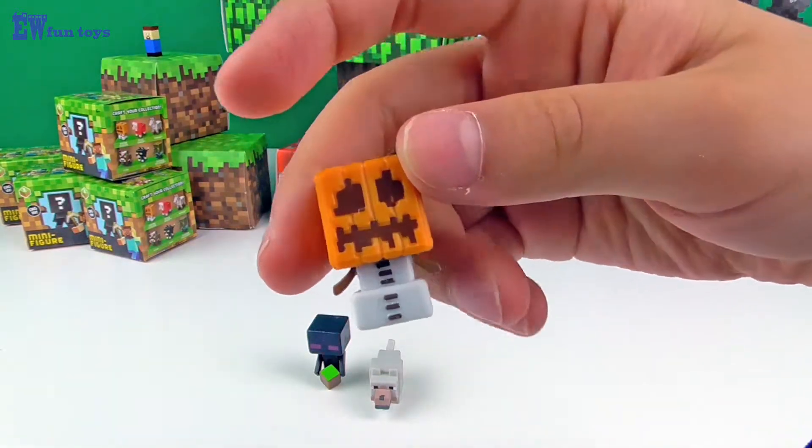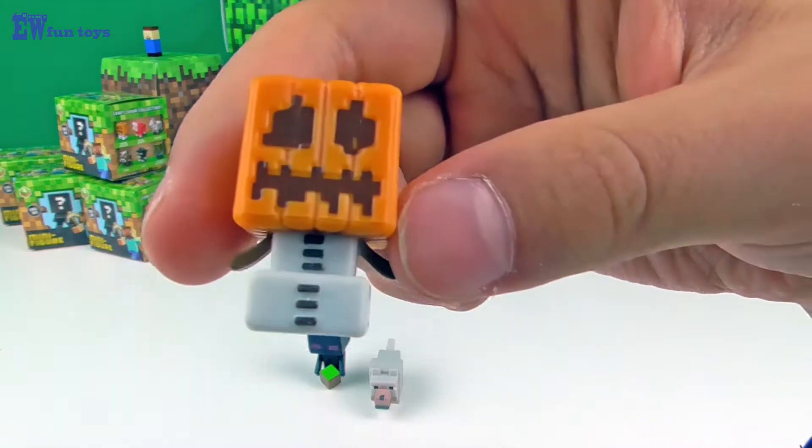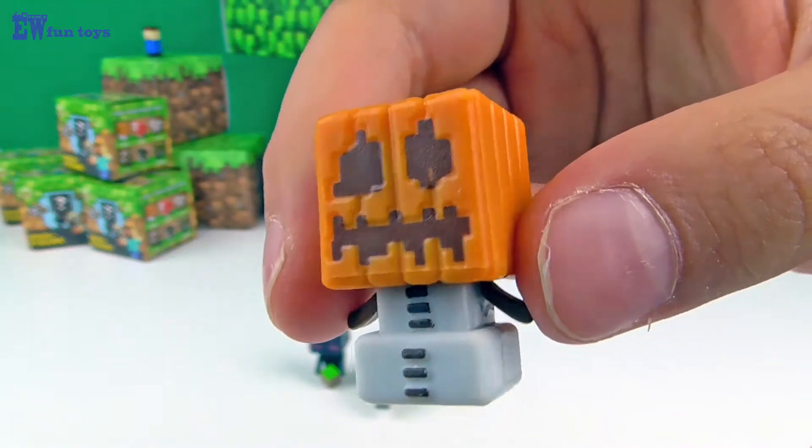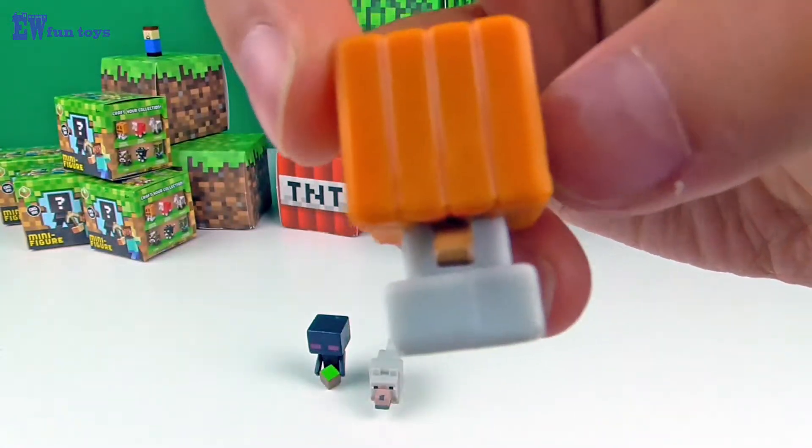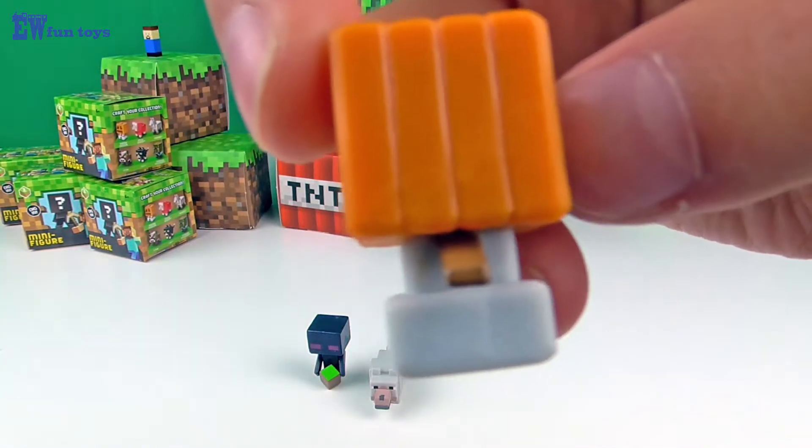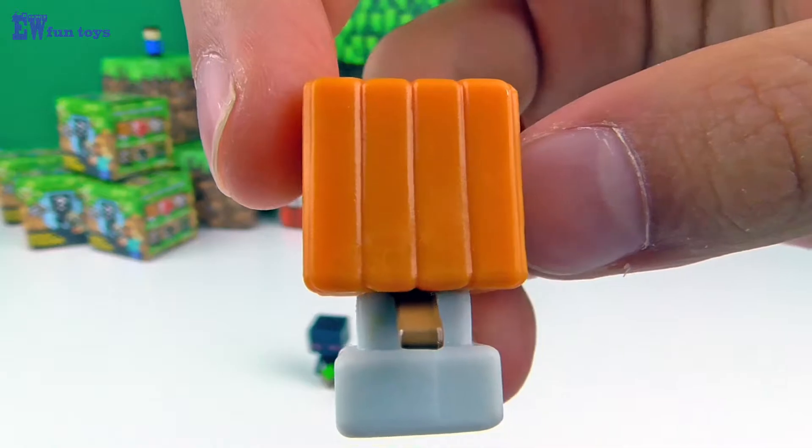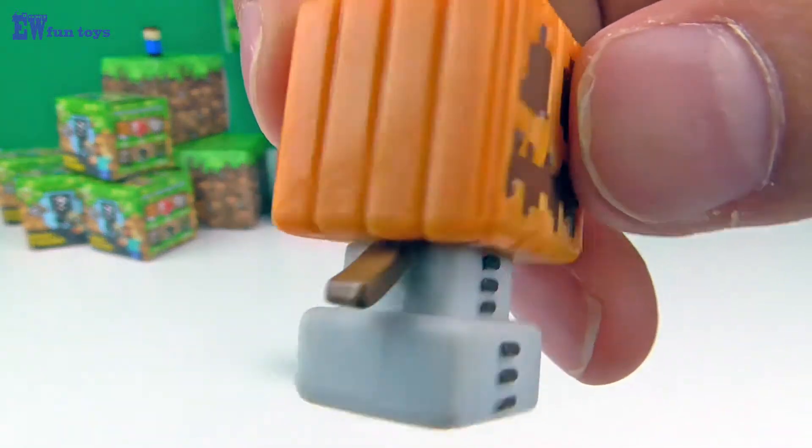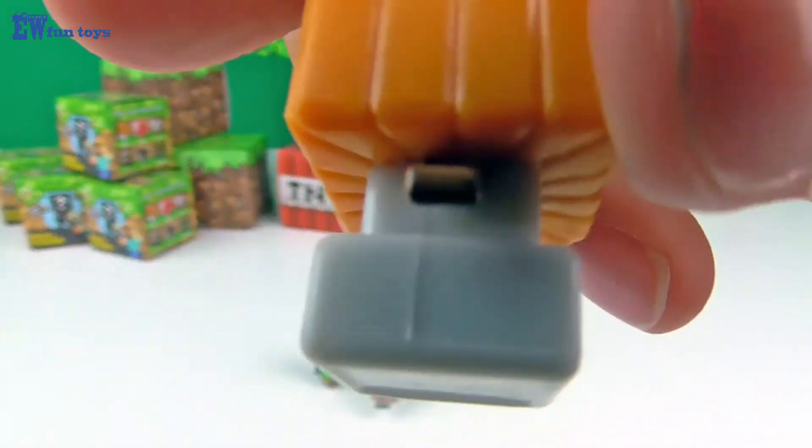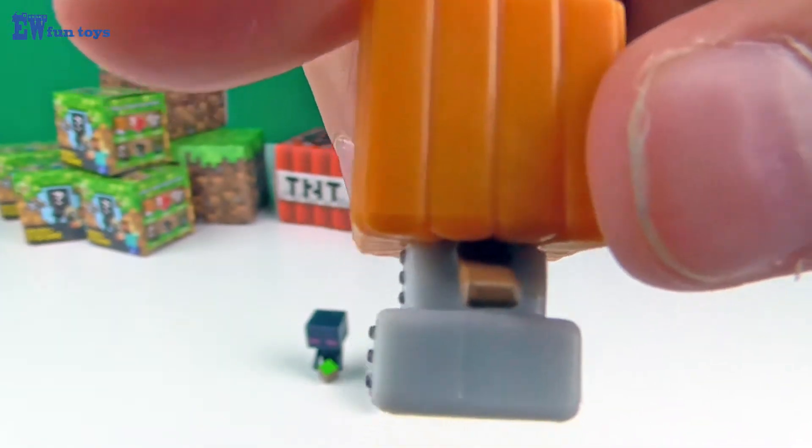Snow Golem, a defensive mob. You can summon snow golems by placing two snow blocks on top of each other and a pumpkin head at the top. The last block must be a pumpkin or else it won't spawn.